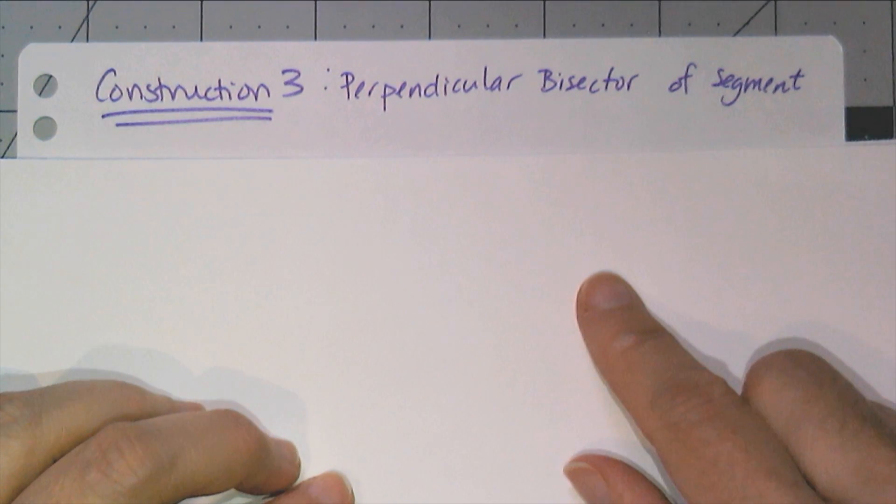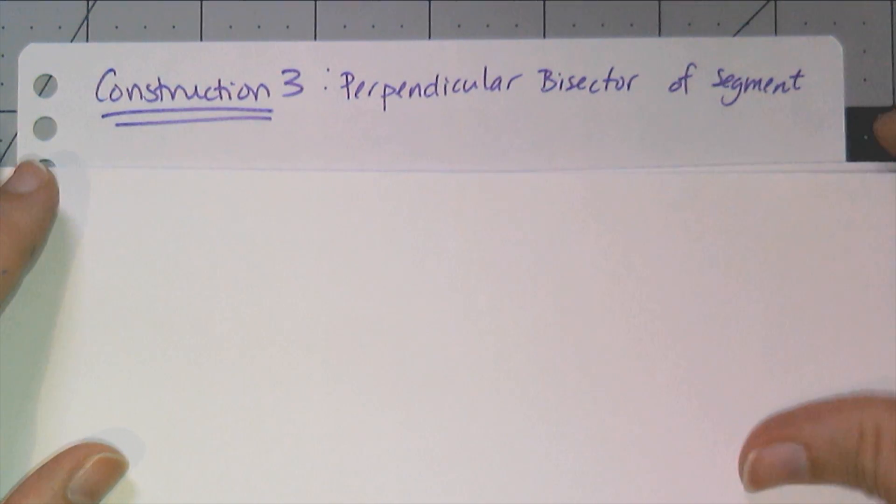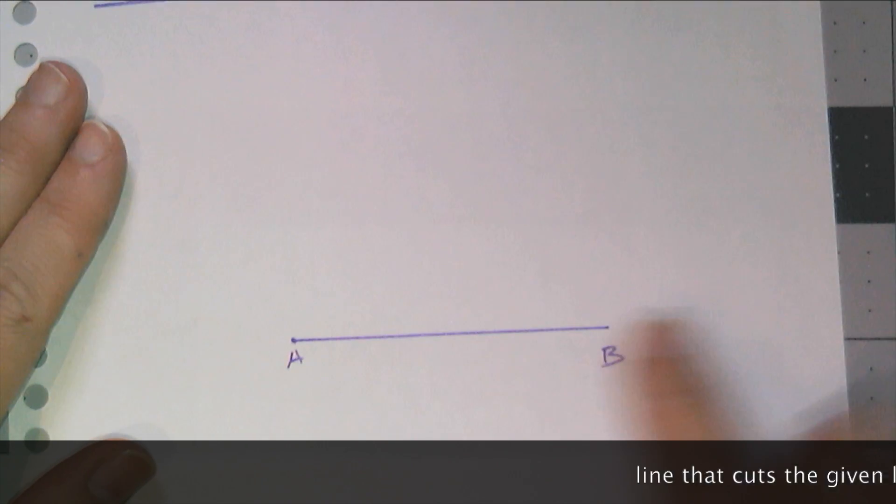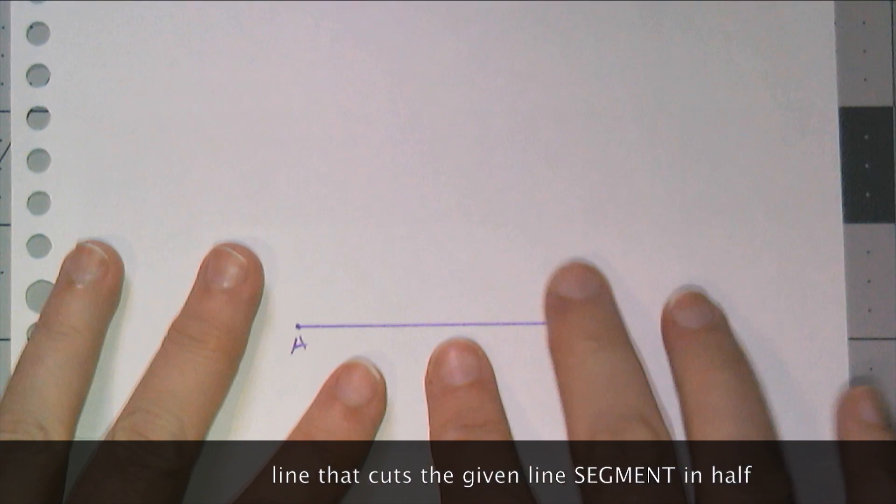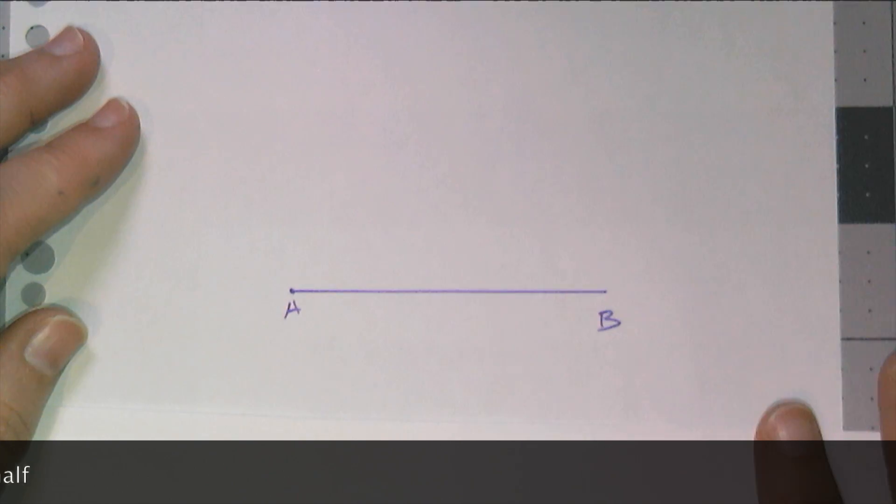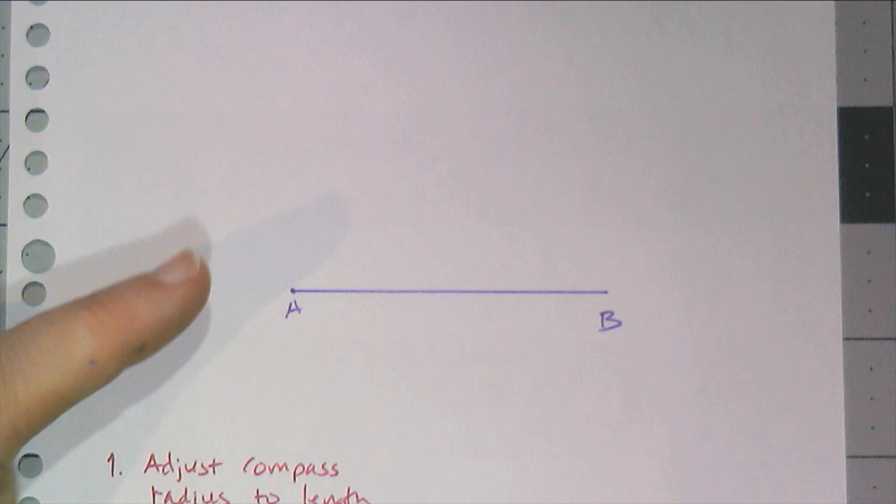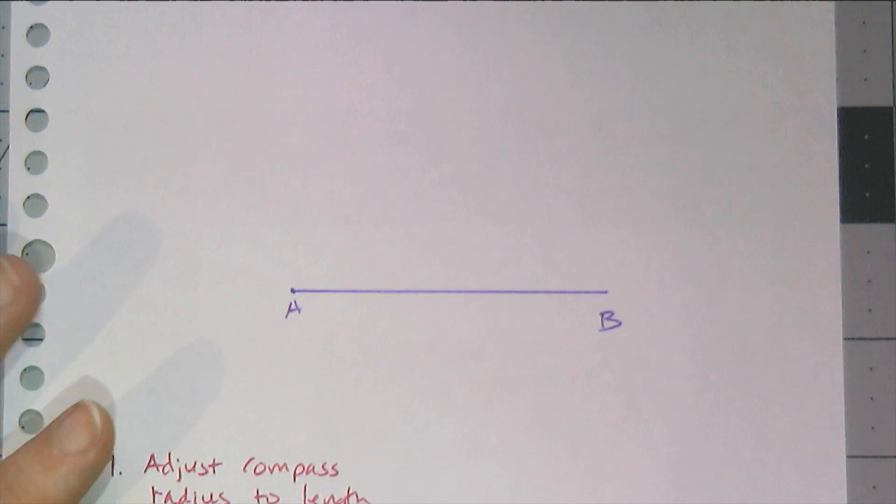So when I'm constructing a perpendicular bisector, I am trying to find a line that basically cuts this line in half and intersects at a 90 degree angle. Now the steps to this I'm going to show after I do it. You'll see part of it here, but I need the space to do the construction.